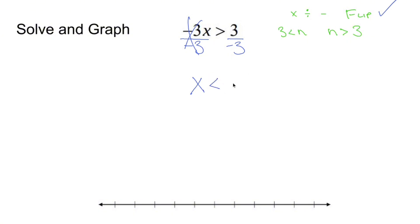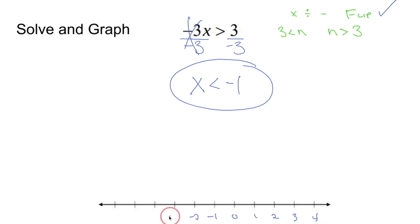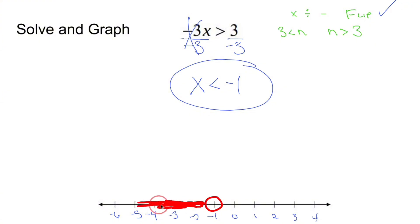Negative 3 is being multiplied to x. How do I get rid of multiplying by negative 3? Divide both sides by negative 3 — and right away we have one of those rules in play. These guys cross out. X drops down, but since I divided both sides by a negative, I flip the greater than symbol to a less than symbol. 3 divided by negative 3 is negative 1. So x is less than negative 1.